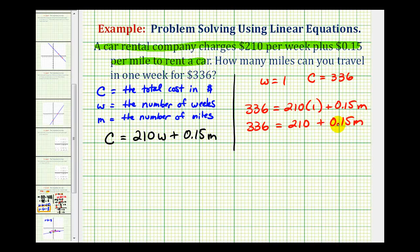And now we'll solve this two-step equation for M. So we'll subtract 210 on both sides. This would be zero. This would be 126 equals 0.15M.